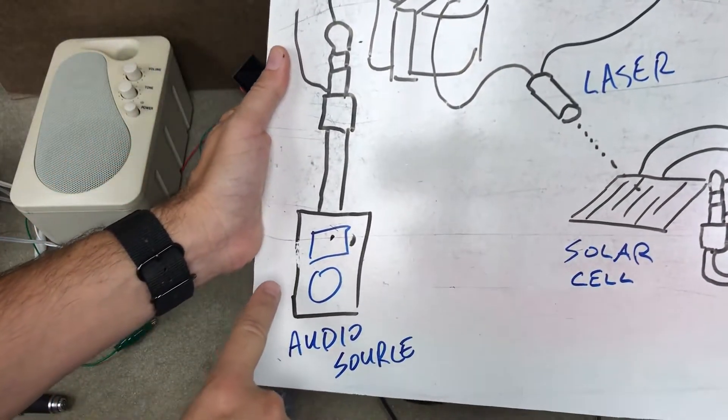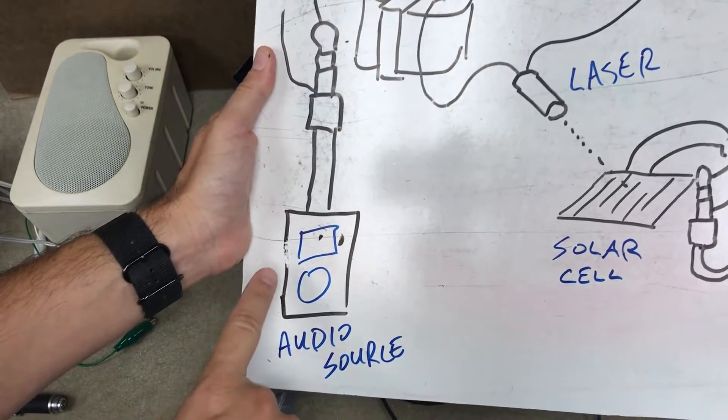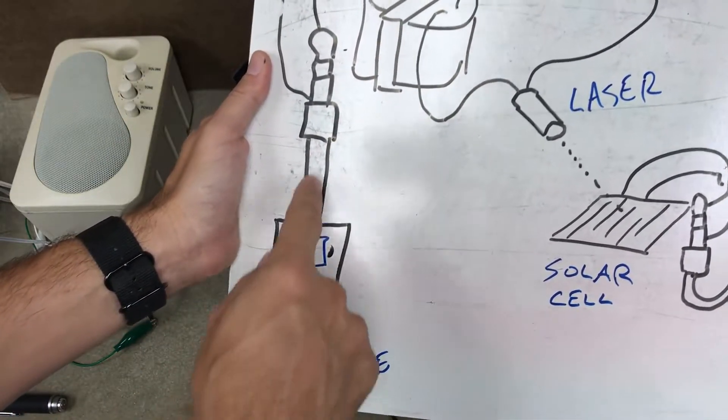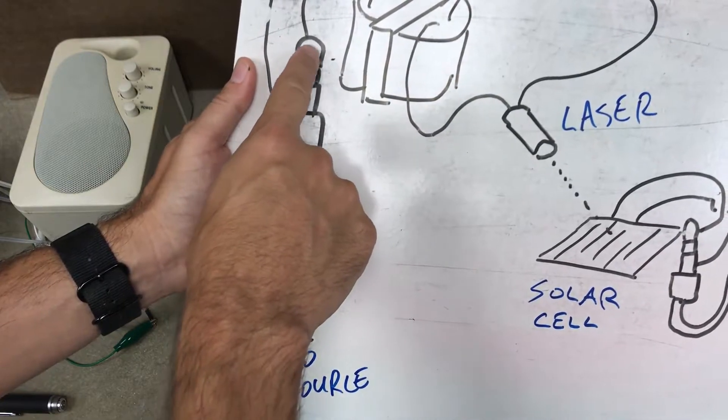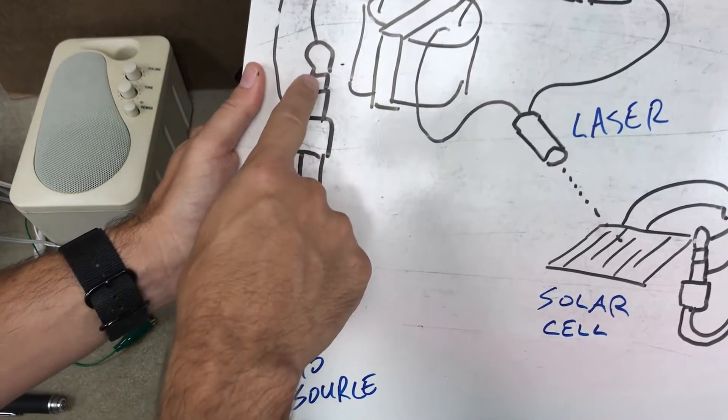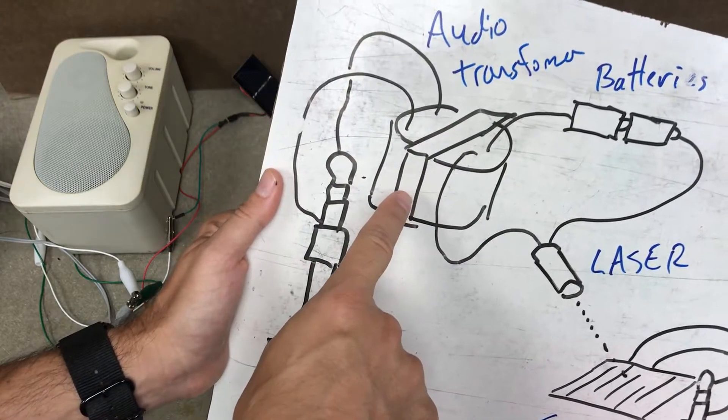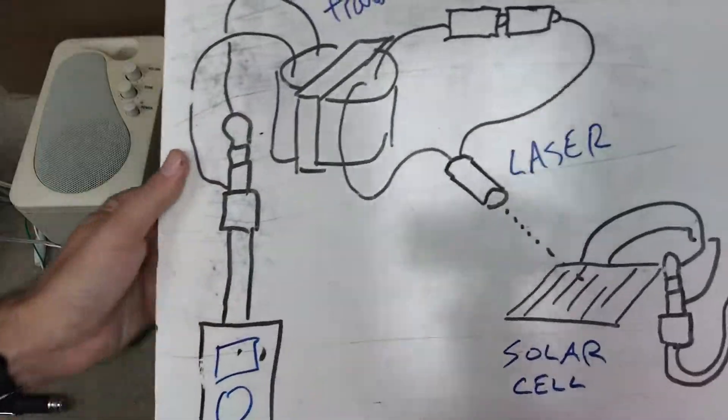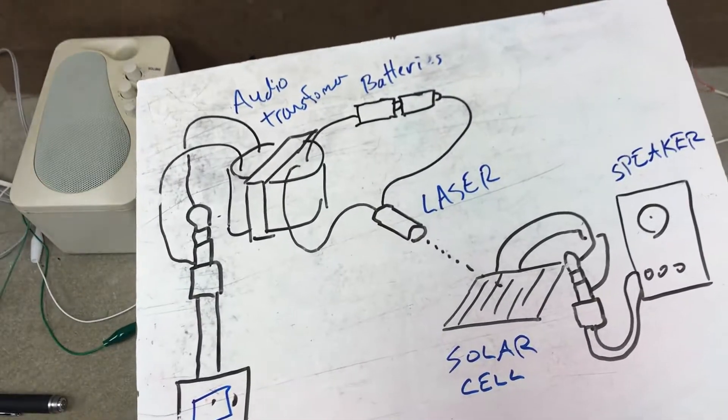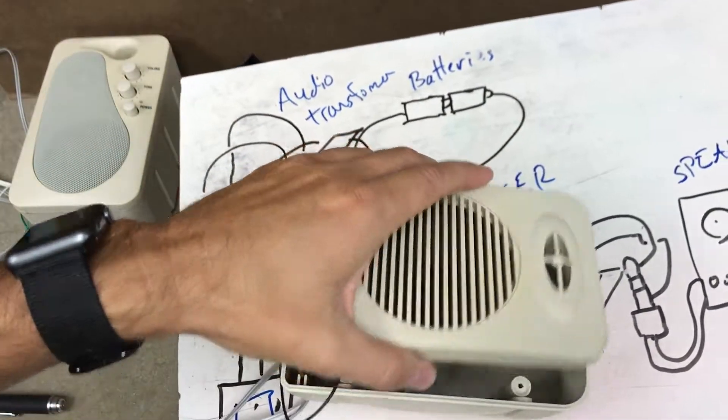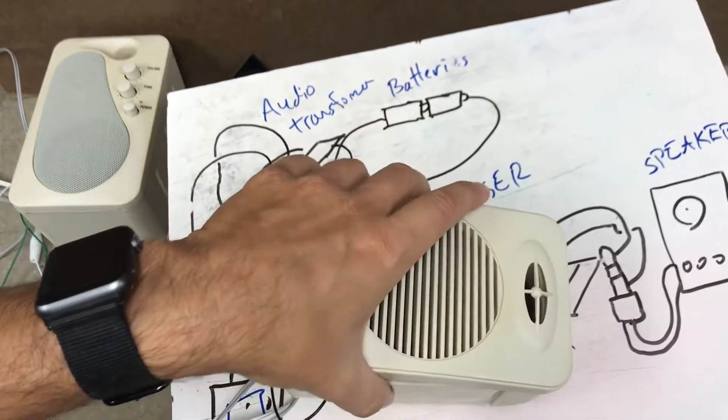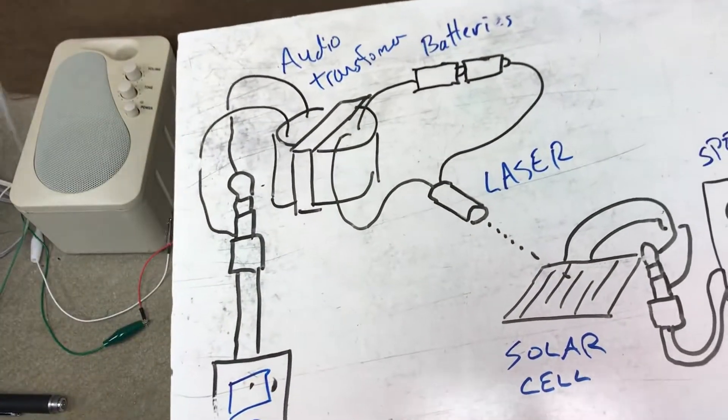What I'm going to do is take an audio source - it could be a microphone, I'm using an MP3 player. I'm going to take the two wires out of the jack and go into one side of this audio transformer. I took it out of this speaker right here. You can find those in lots of different places.